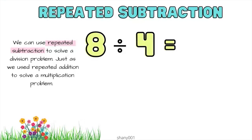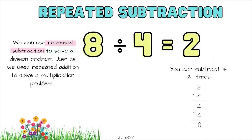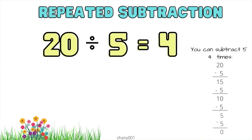Repeated subtraction. We can use repeated subtraction to solve a division problem, just as we used repeated addition to solve a multiplication problem. For example, 8 divided by 4 equals 2 — you can subtract 4 two times: 8 take away 4 is 4, and 4 take away 4 is 0. Here is another example: 20 divided by 5 equals 4 — you can subtract 5 four times. We basically subtract until we get to zero.